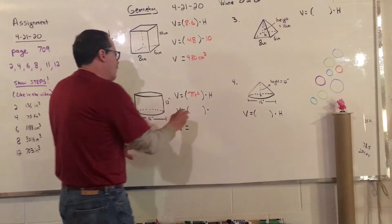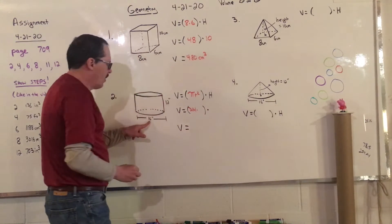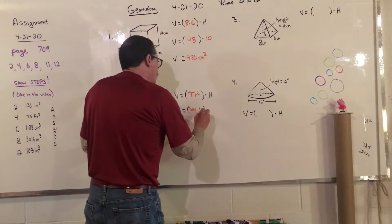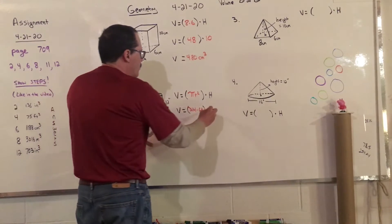So in here, I'm going to have to write 3.14 times. This is diameter, so that'd be 8. 8 squared would be 64. And so then you go times the height, which would be 12.